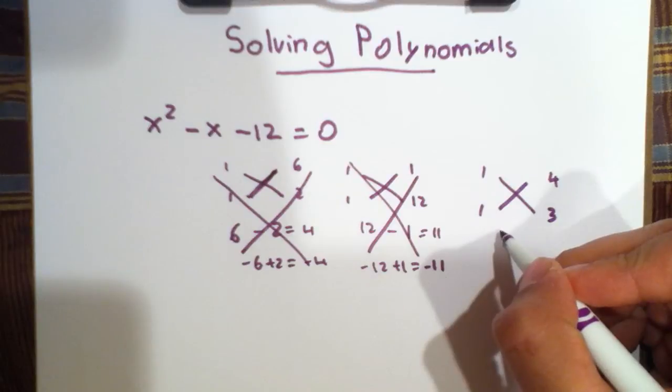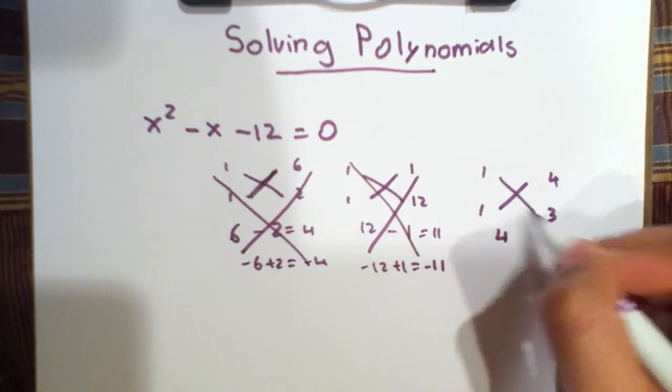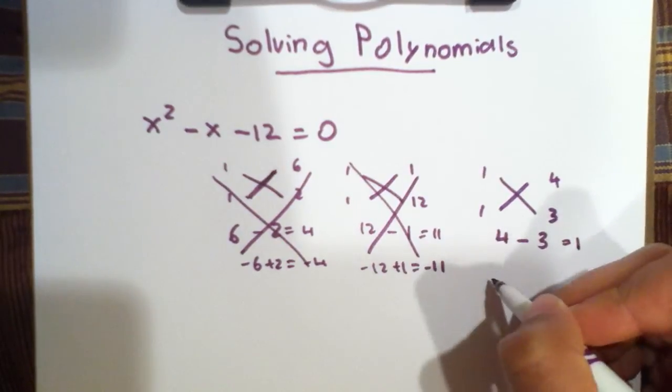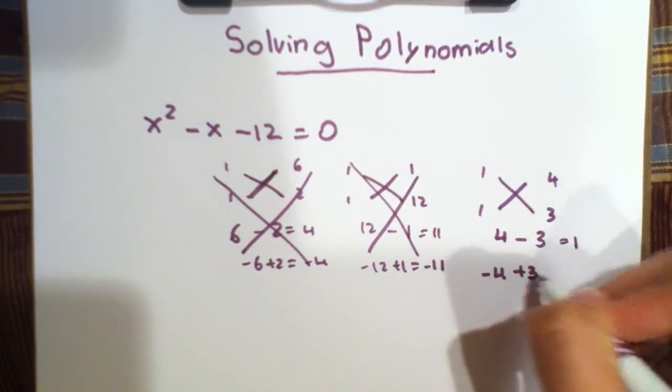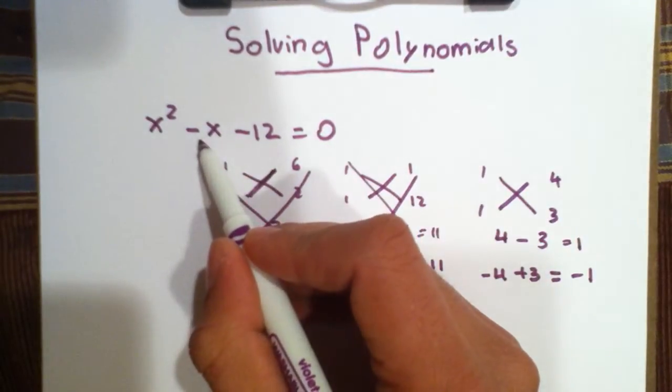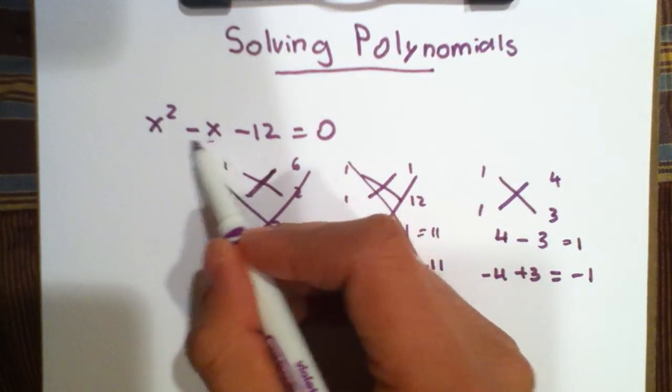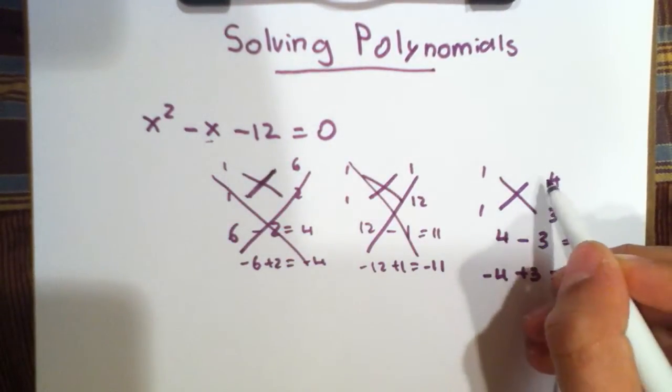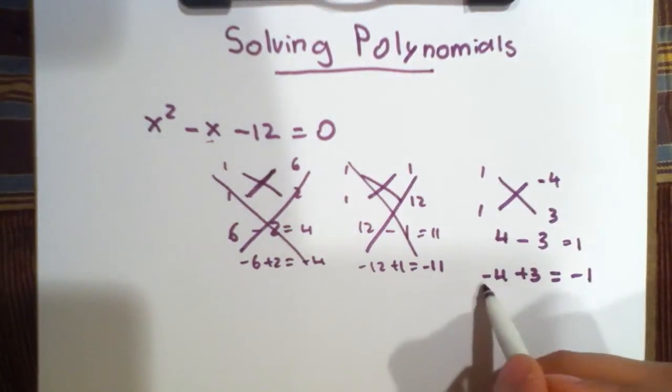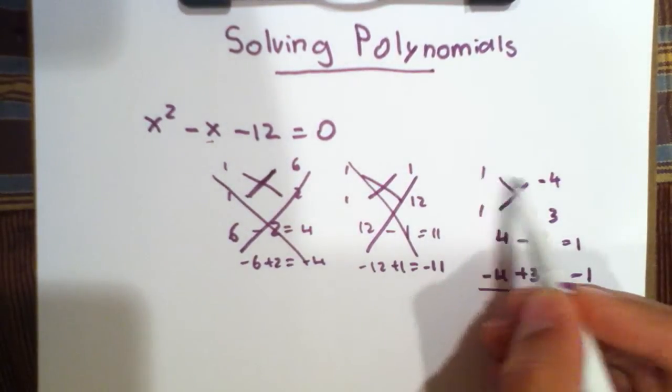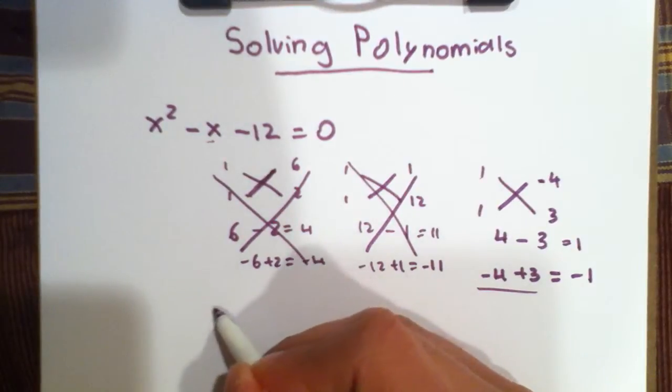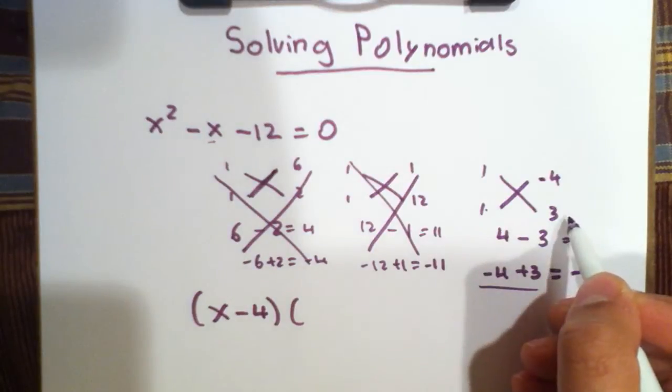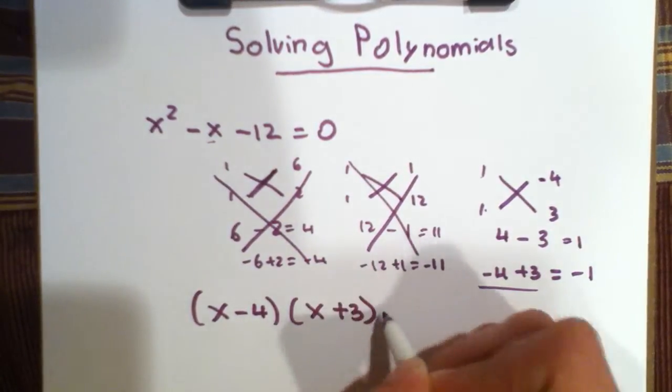Let's try this one. 4 times 1 is 4, and 3 times 1 is 3. 4 minus 3 is equal to 1, but we want a negative 1. So minus 4 plus 3 is equal to negative 1, which does give us the coefficient in front of this x term here, negative 1. So this works, and that tells us that the 4 has to have a negative sign in front of it, as shown by this. So now we can read this across: x minus 4 times x plus 3 equals 0.